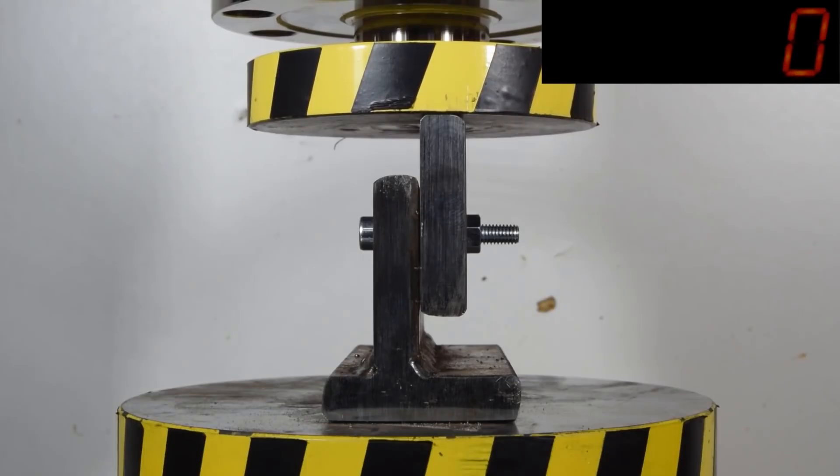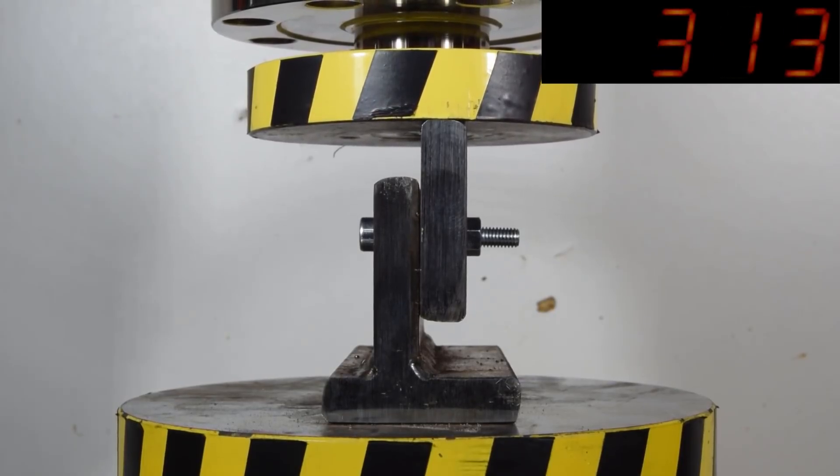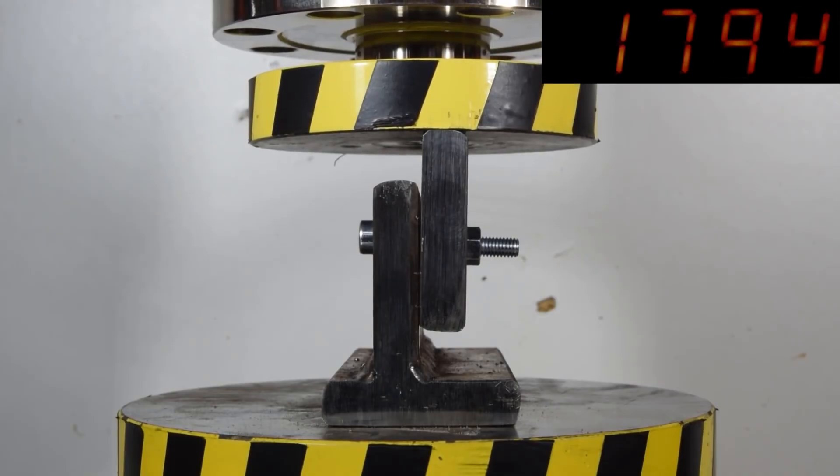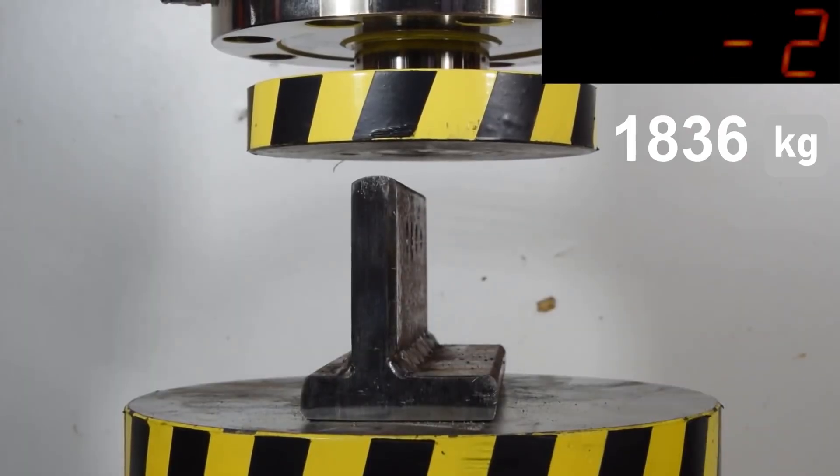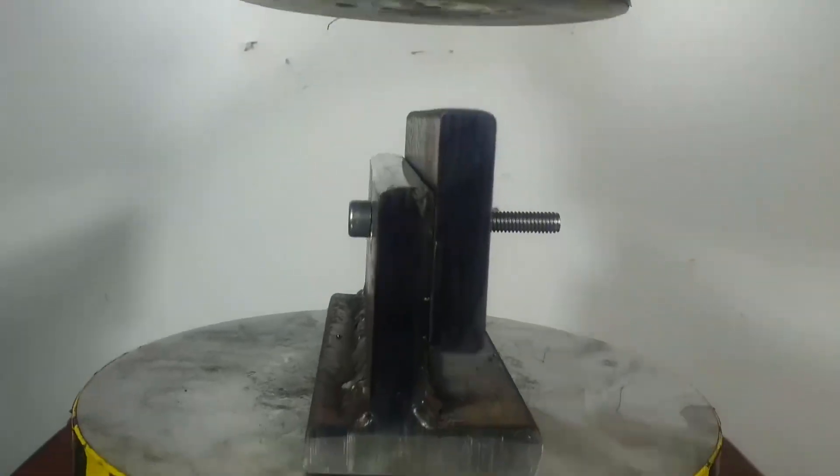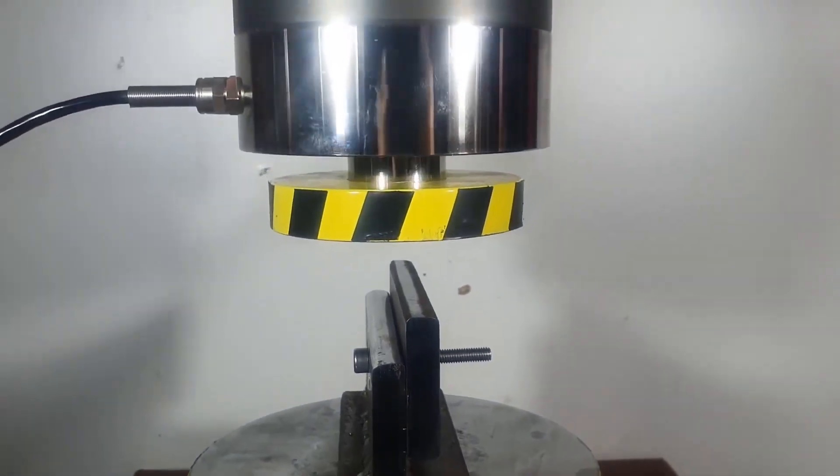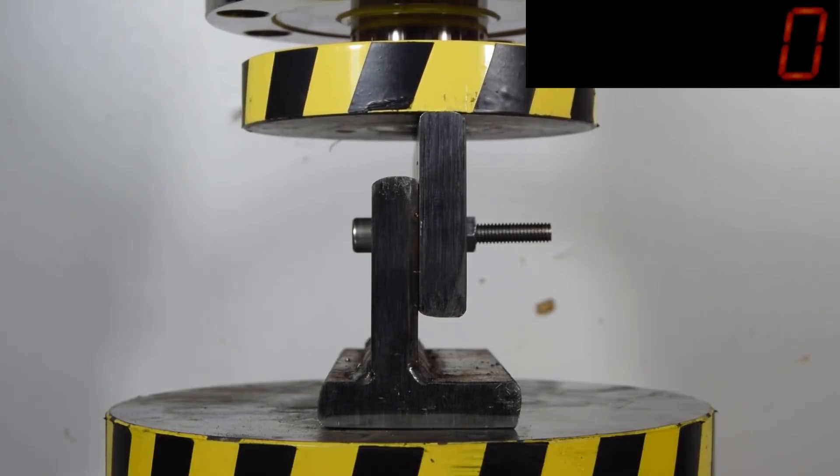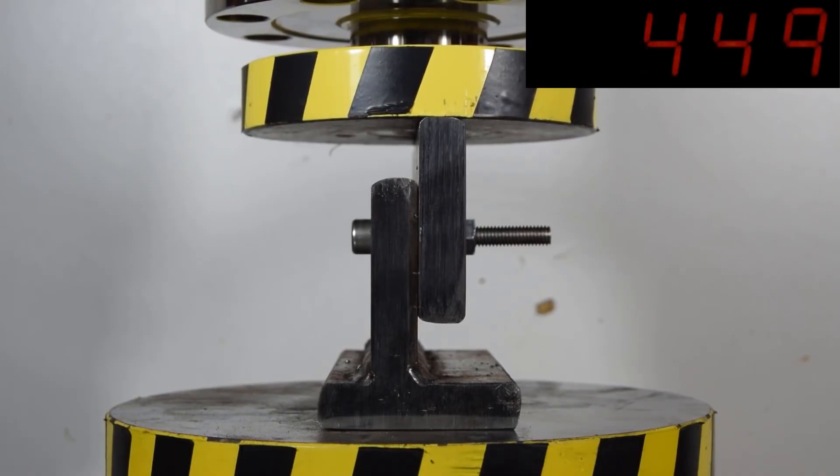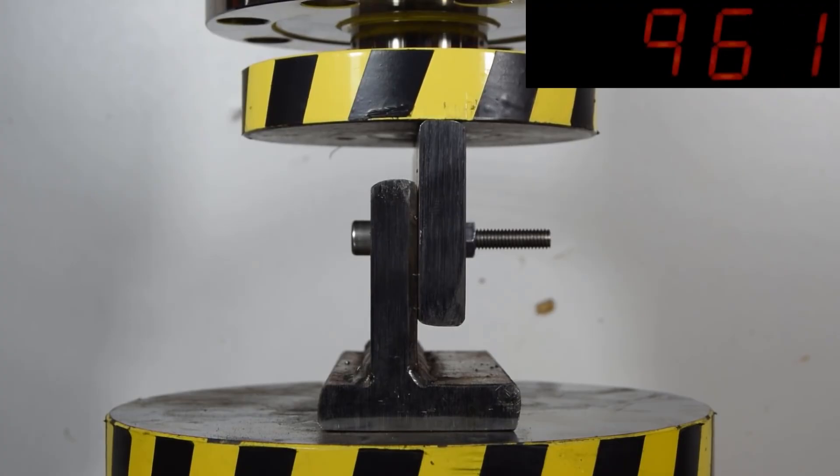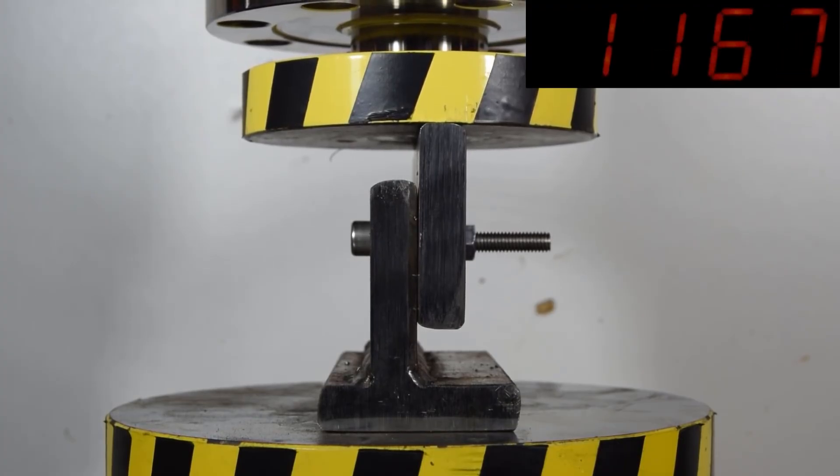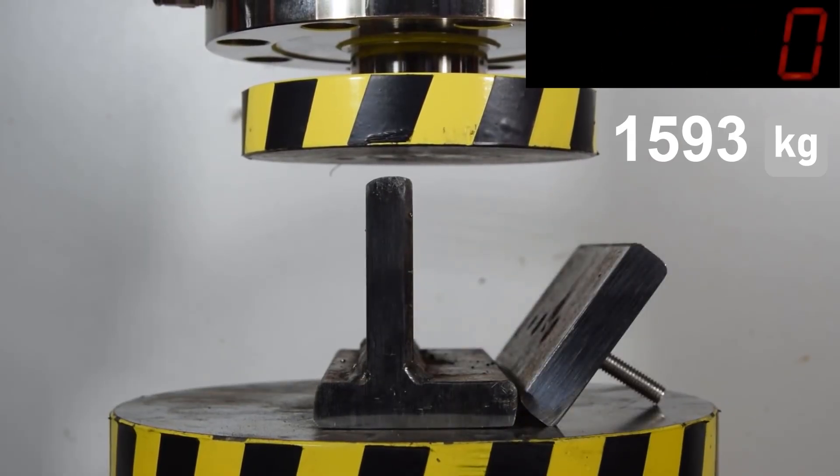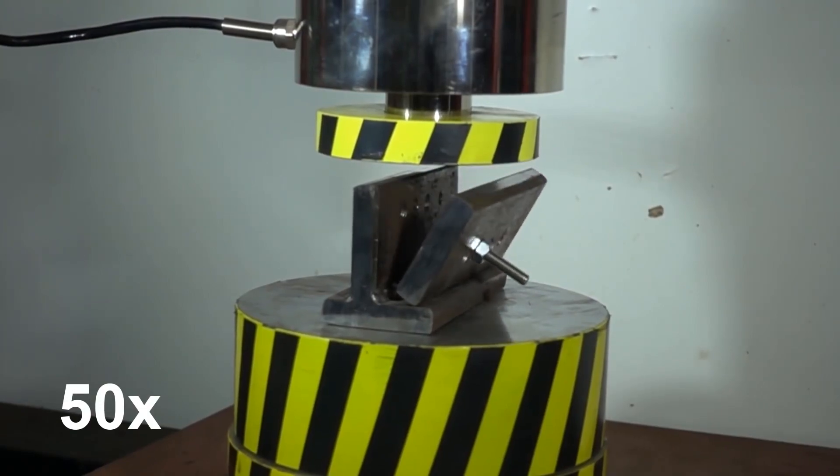First up is the carbon steel M6 bolt. The maximum load for shearing the carbon steel bolt was 1,836 kg. Next in line are the stainless steel bolts, M6 also. The maximum load for shearing the stainless steel bolt was 1,600 kg, which is 200 kg less than the first bolt.